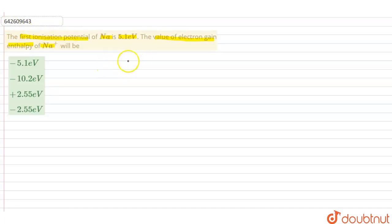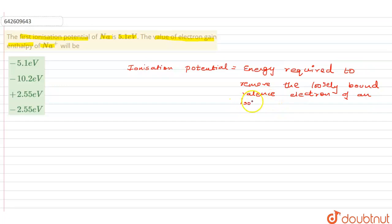So first of all, ionization potential—what is it? If you can recall, ionization potential is the energy required to remove the loosely bound valence electron of an isolated gaseous atom. Yes, so this is our technical definition of ionization potential, or you could also call it ionization enthalpy.